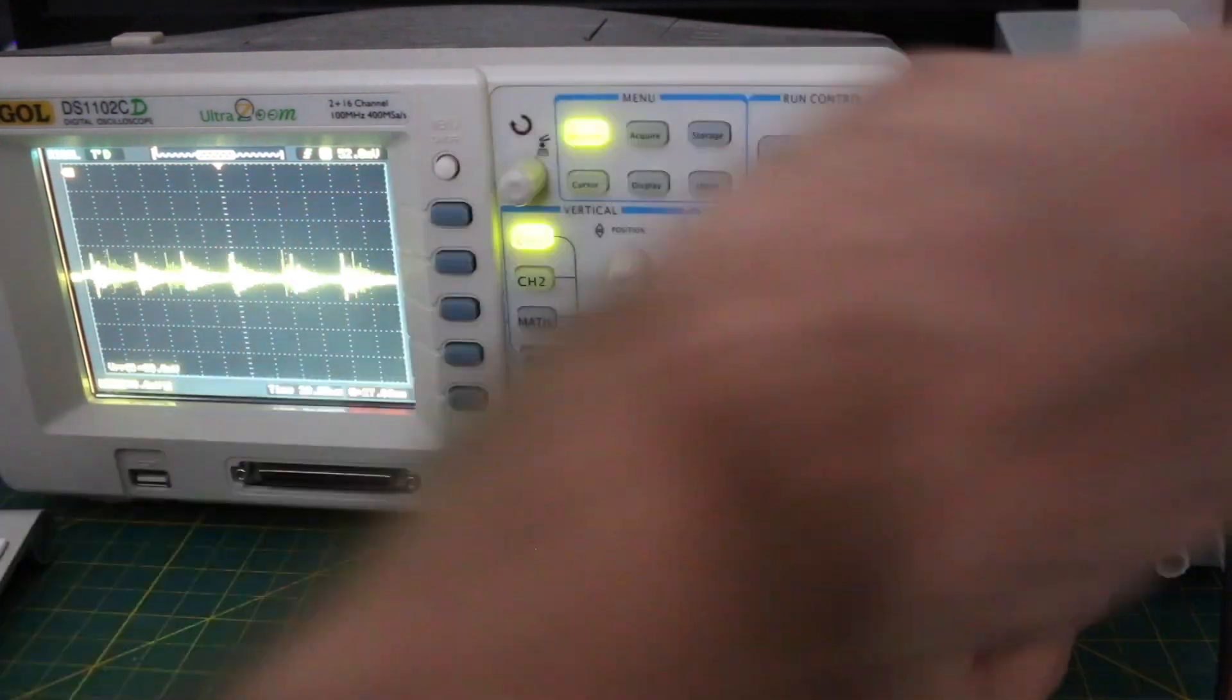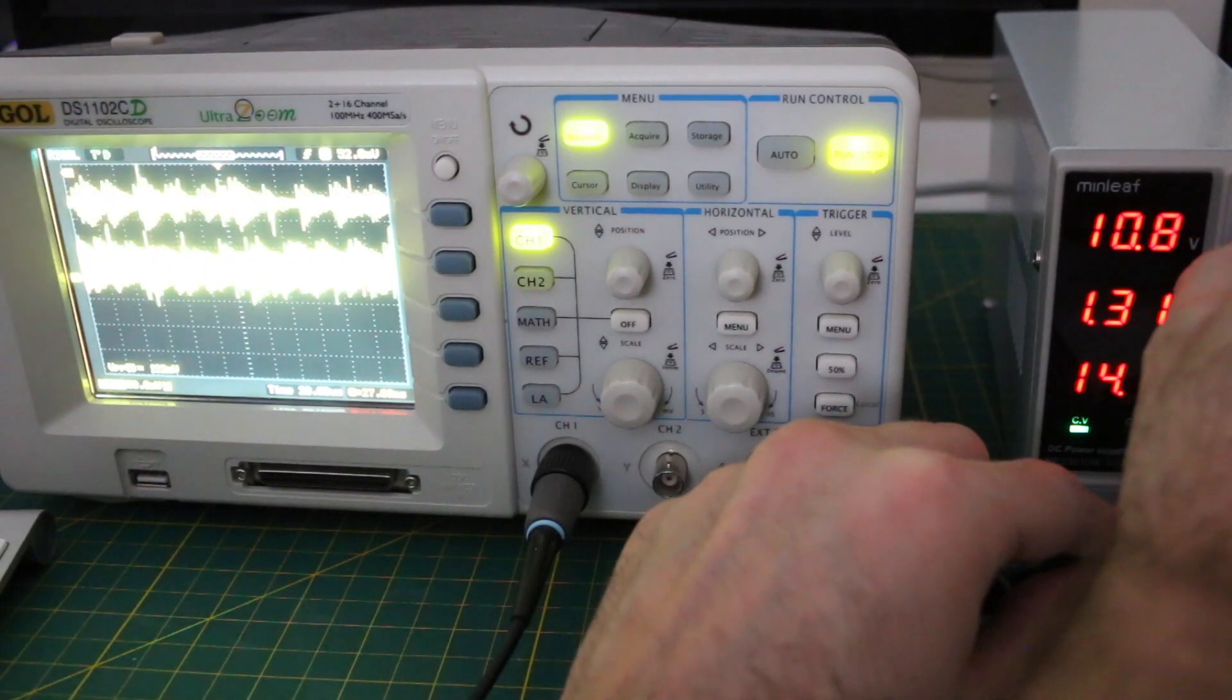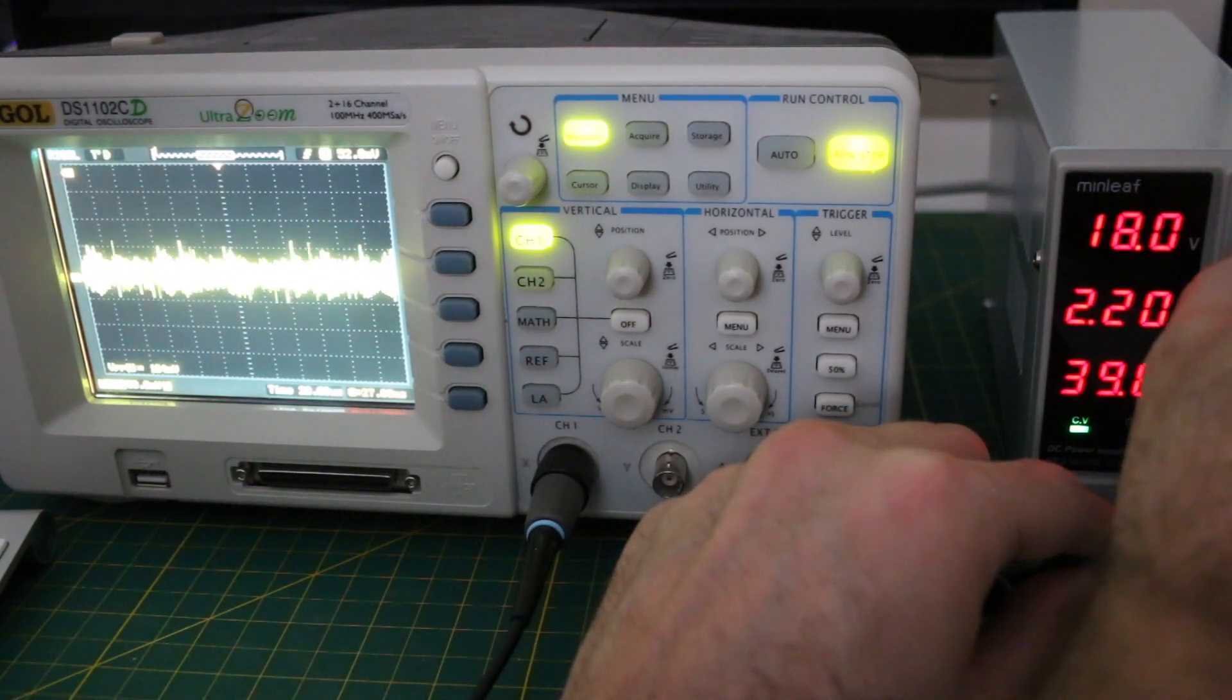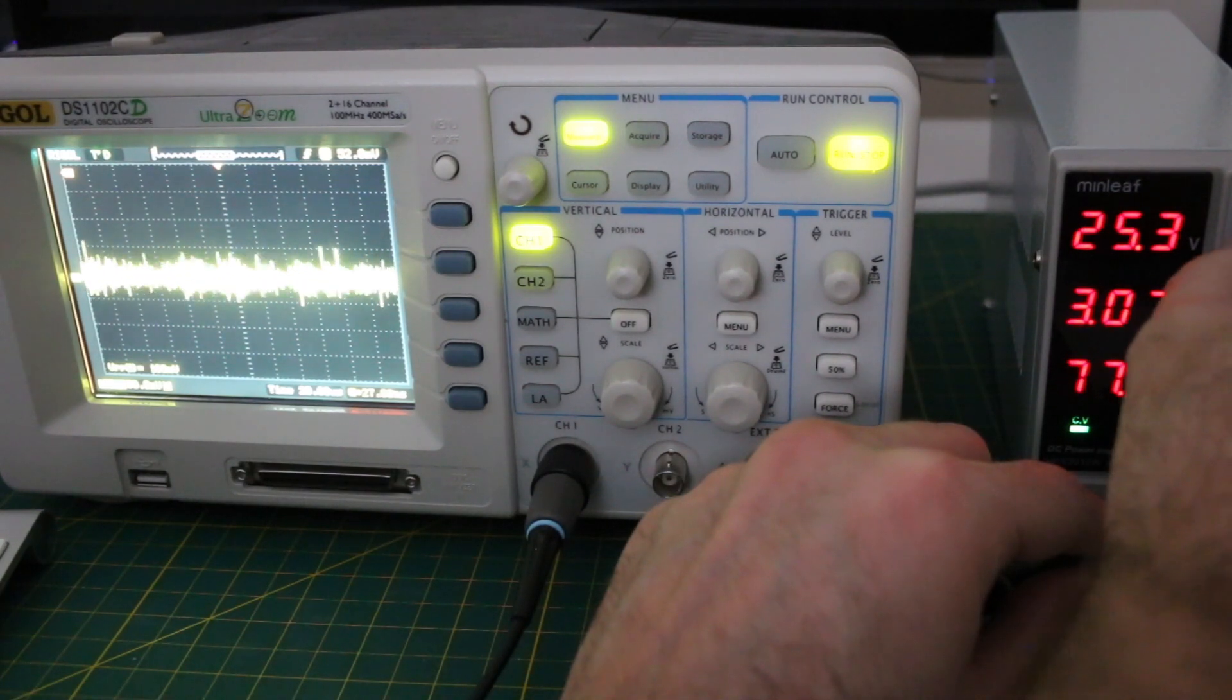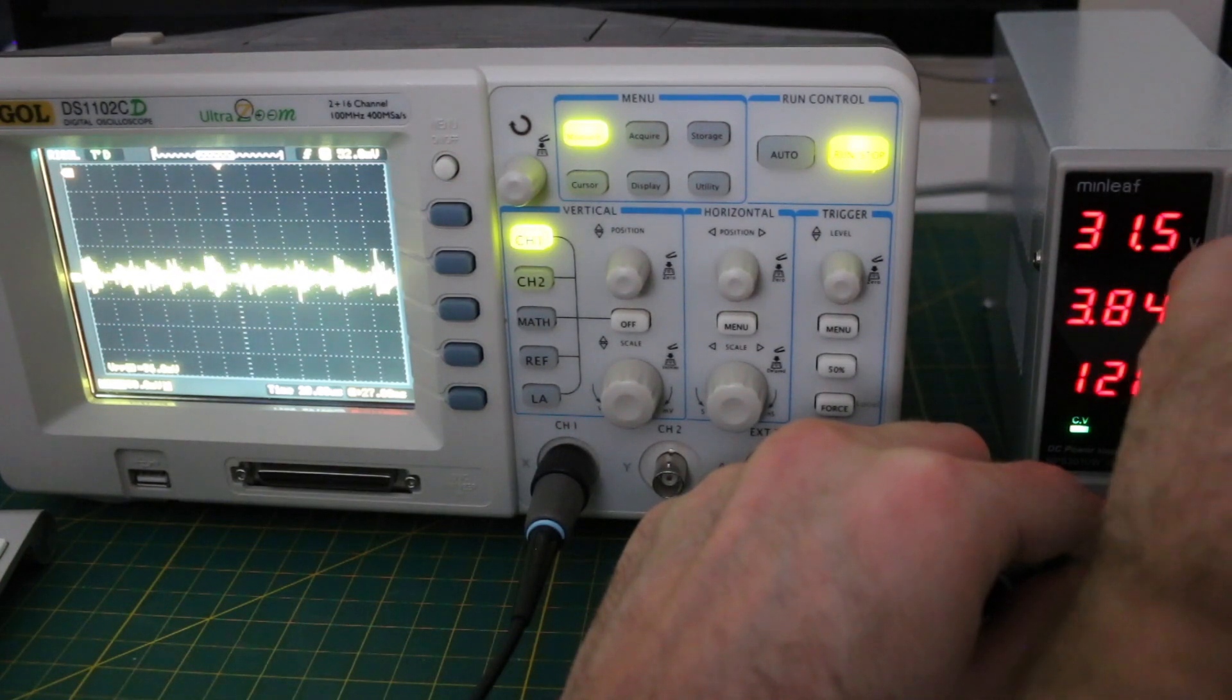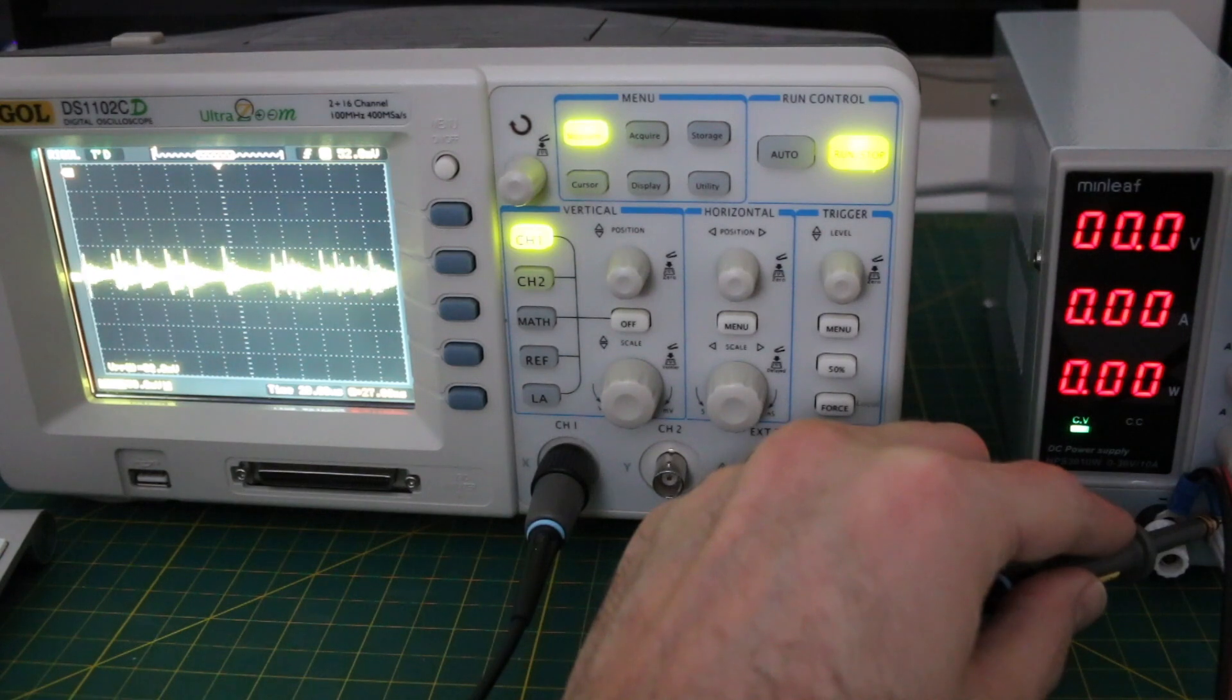We can see as we increase the load the waveform jumps as we're increasing, and then it settles back down. We get a lot more noise on there, but it seems it is around the 100 millivolt peak to peak area all the way up to a couple of amps that I'm capable of measuring with right now. So that looks generally okay.